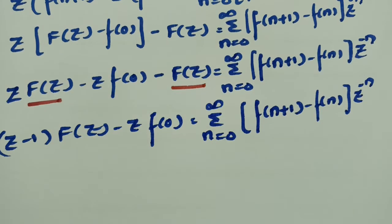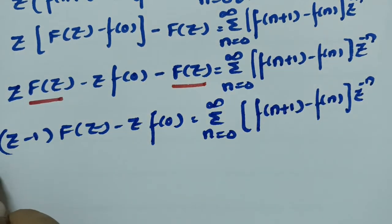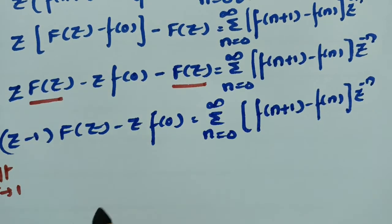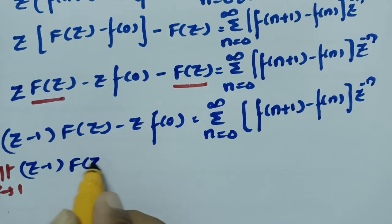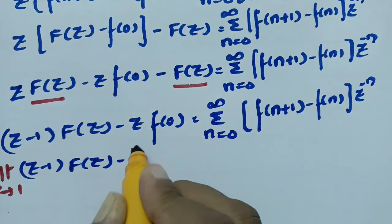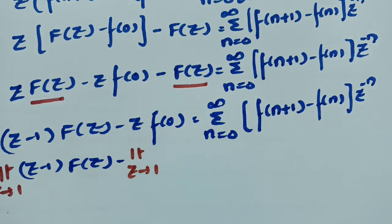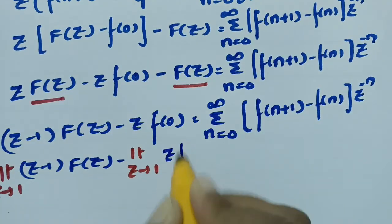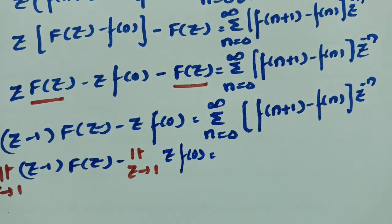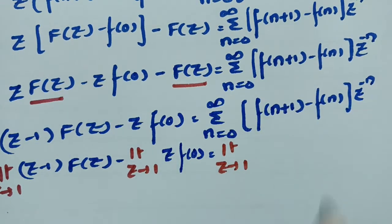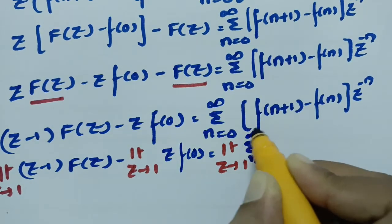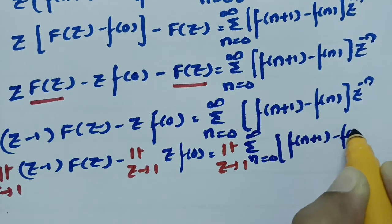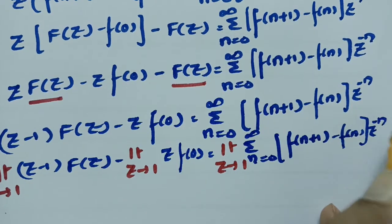Now I am taking the limit as z tends to 1 on both sides. On the left side, this gives limit z tends to 1 of (z minus 1) into F(z) minus z into f(0). On the right side, limit z tends to 1 of sigma from n equals 0 to infinity of [f(n+1) minus f(n)] into z to the power minus n.